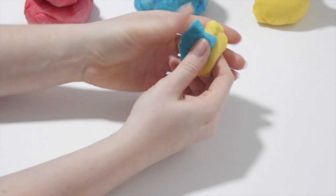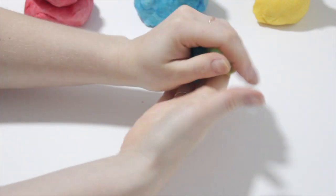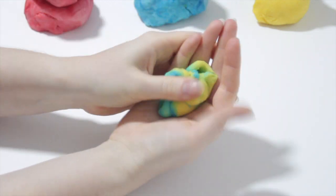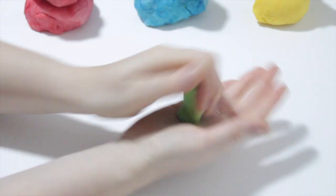So we will need some blue Play-Doh and some yellow Play-Doh and blend that together until we have a beautiful green Play-Doh.